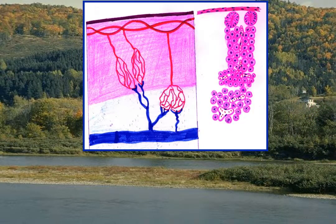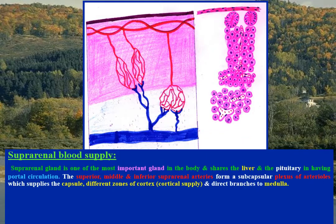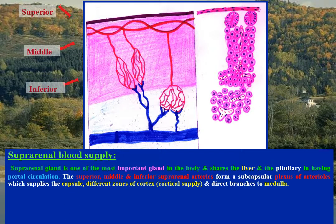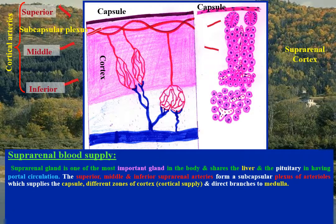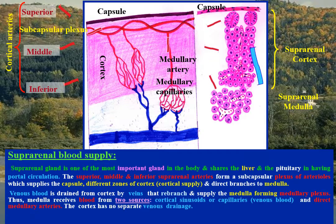Suprarenal blood supply: the suprarenal gland is one of the most important glands in the body and shares with the liver and pituitary in having portal circulation. It is supplied by superior, middle, and inferior suprarenal arteries, forming a subcapsular plexus of arterioles which supplies the capsule, the different zones of the cortex, and gives direct branches to the medulla. Venous blood is drained from the cortex by veins that re-branch and supply the medulla, forming a medullary plexus.